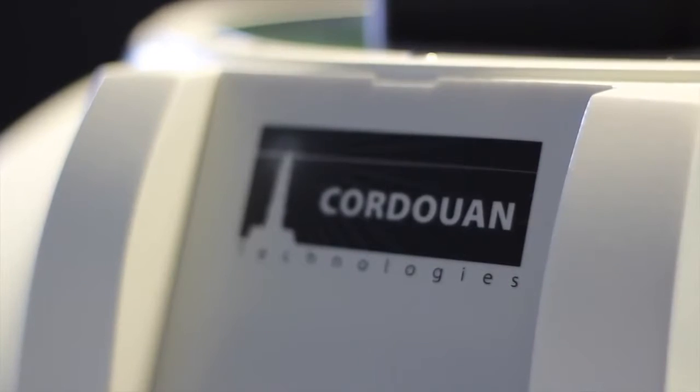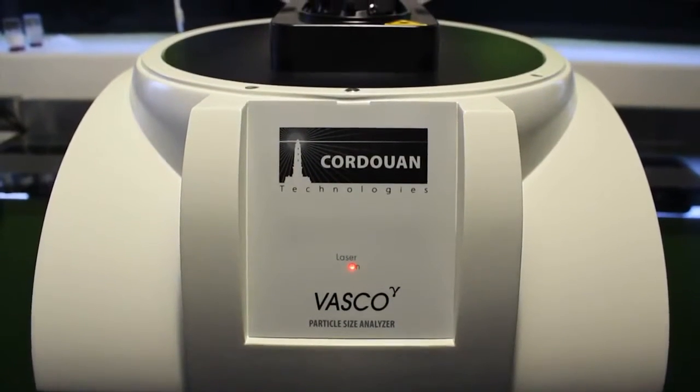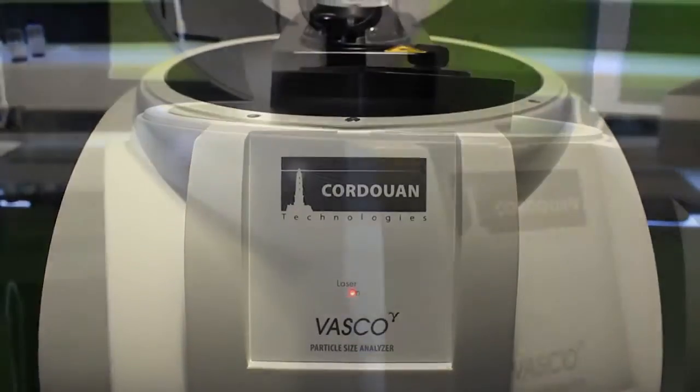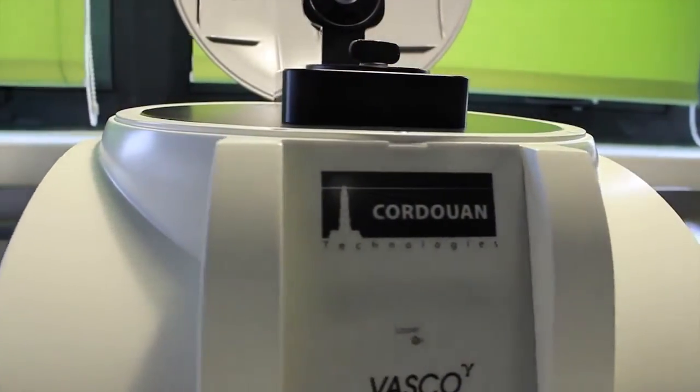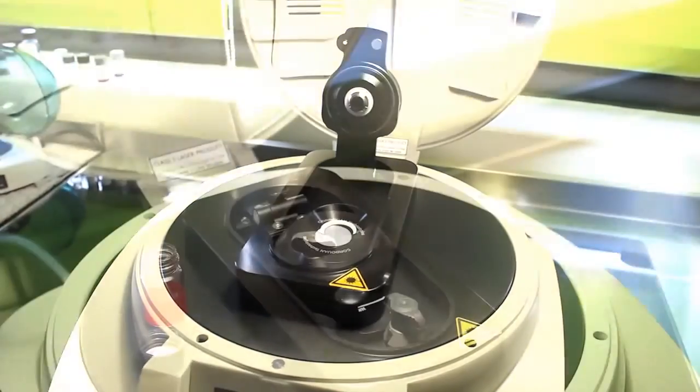Kortuin Technologies is pleased to introduce its range of Vasco Particle Size Analyzers. Vasco Particle Size Analyzers are dedicated to the measurement of nanoparticle size in the range of 1 nanometer to 10 microns by the well-known technique Dynamic Light Scattering.